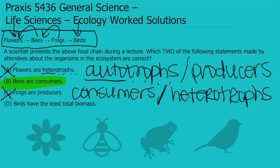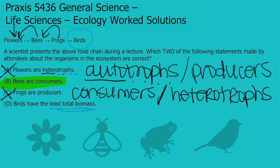Let's make sure we know why D is correct. It says birds have the least total biomass. Biomass is the total mass of living things — plants, animals, fungi, microbes, and their remains — in a given area. In ecology, organisms with the least biomass are at the top of the food chain or at higher trophic levels, so biomass tends to decrease as we move up the food chain. Since birds are at the top, D is correct.